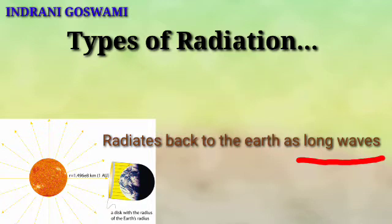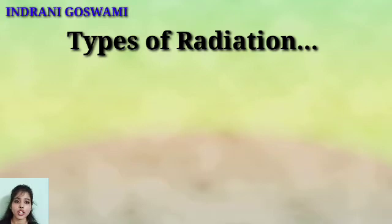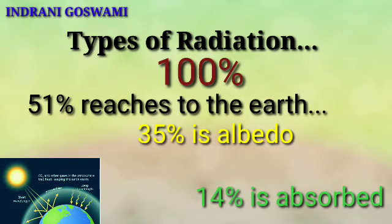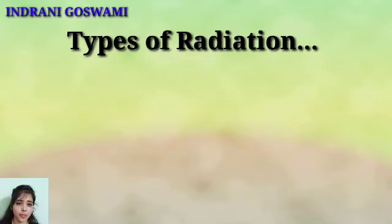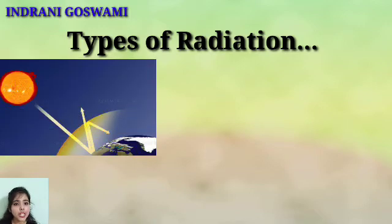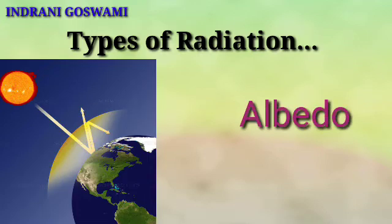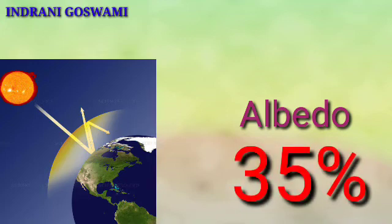Out of the total 100 percent of solar energy, 51 percent reaches the Earth's surface, 35 percent is radiated back to space without doing any heating, and 14 percent is absorbed by the Earth. The 35 percent radiated back to space is known as albedo. So the amount of albedo is 35 percent — in some books it is written as 34 percent.